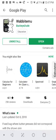It's called Wabbit EMU. You can find it on the Apple Store. Please go ahead and pause the video while you find the app and install it.